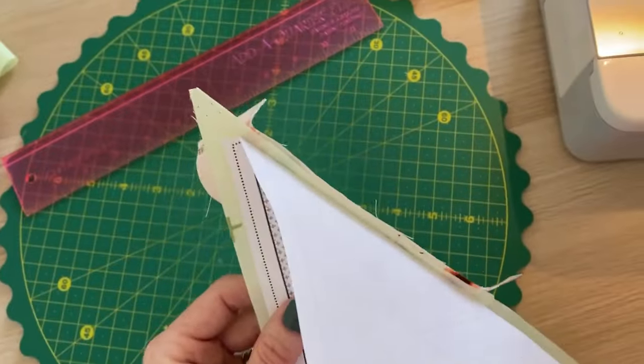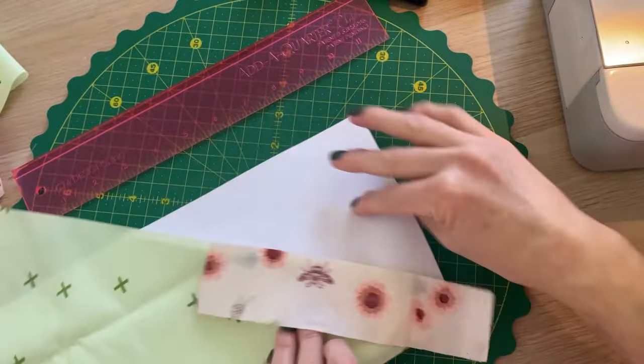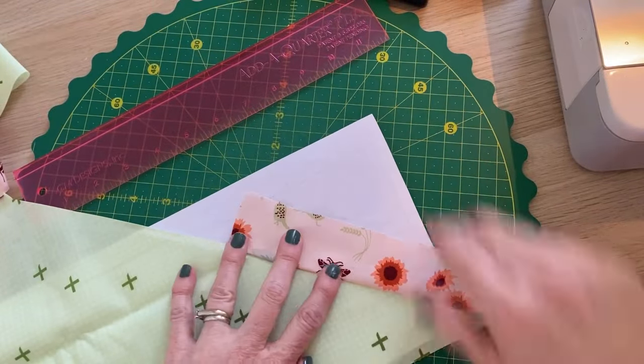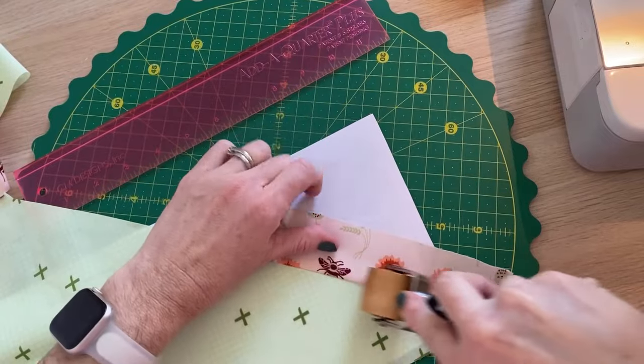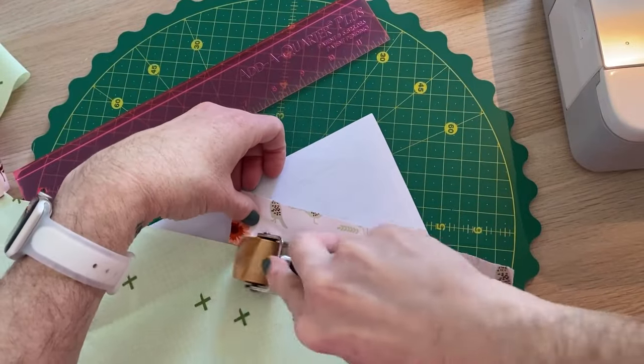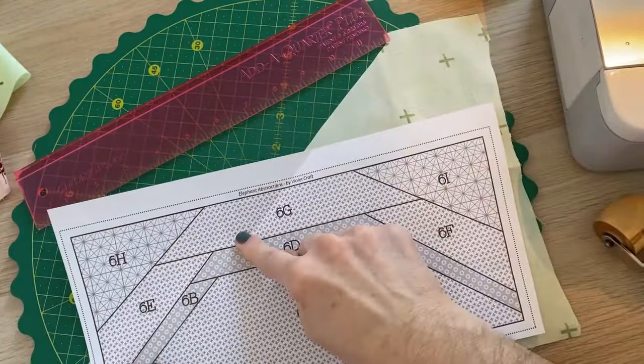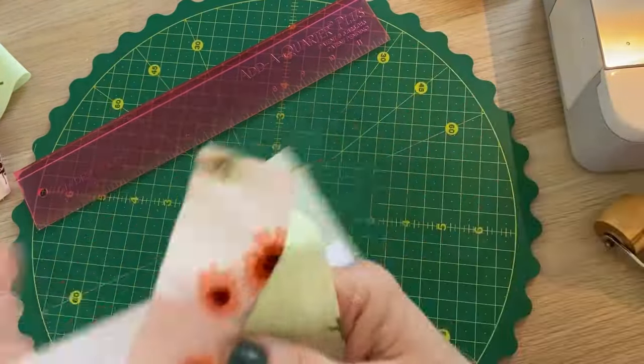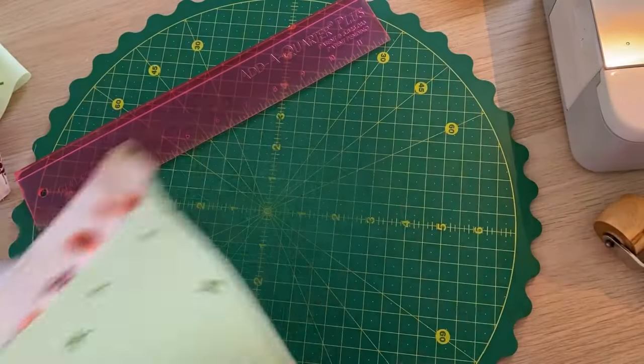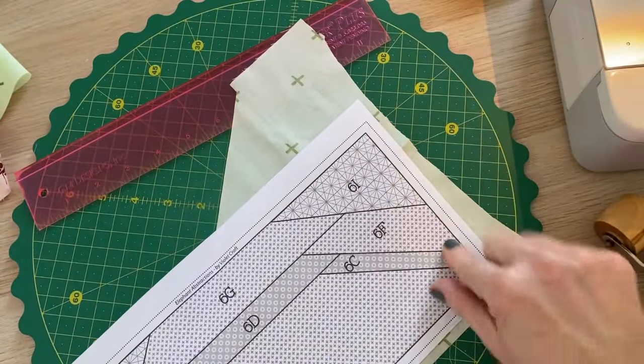Then we open it up, back to our mat. Open and pull. So now our bee piece is done. Next, we would move over to C.